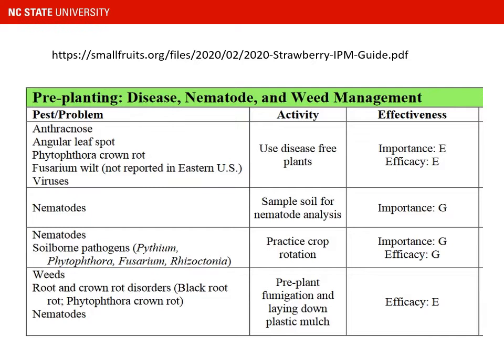For nematodes, if you have a site with a history of nematode problems, I'd encourage you to sample for nematode analysis — find out what you have before you plant. One way to manage nematodes and also other soil-borne pathogens is to practice crop rotation. If there's any way to configure your irrigation to allow field rotation, that's a good long-term strategy. For weed control and root and crown rot disorders, our primary strategy once the site is selected is pre-plant fumigation, which is a key part of the plasticulture production system.